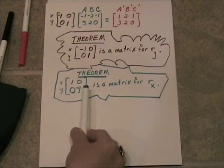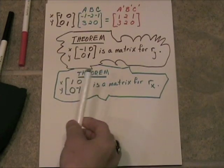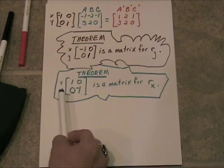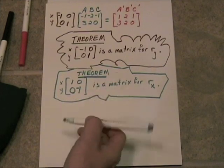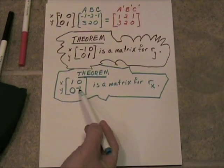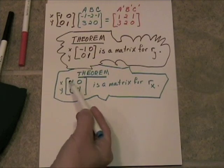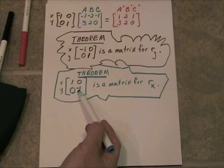So if we want to reverse y values and leave the x values the same, the matrix we would multiply by would be a slight alteration once again of the identity matrix. In this case, we would leave this one the same, we would change this one to a negative one.